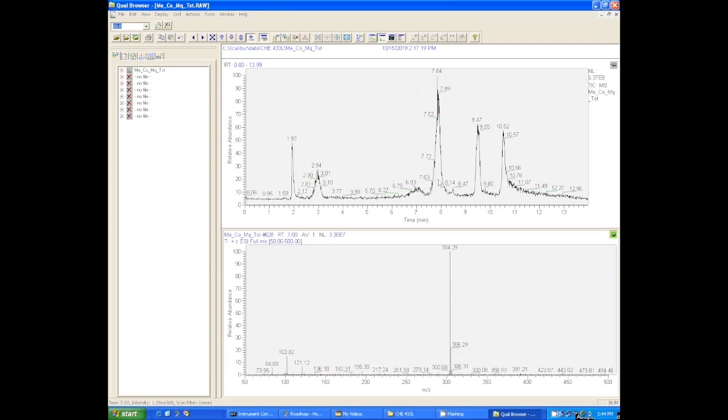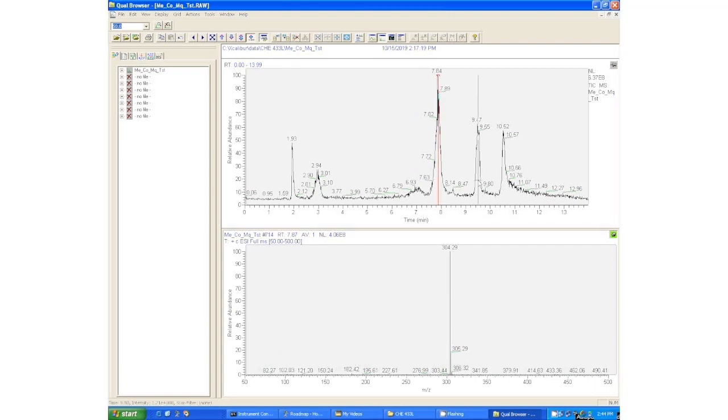So let's look at some peaks. If we click on this guy right here, this is 304, and that corresponds to the expected mass for cocaine. Now we can't say for sure that this is cocaine just based on that. I know that there's cocaine in this, but we can say that that mass is consistent with the mass of cocaine.